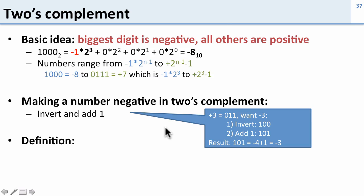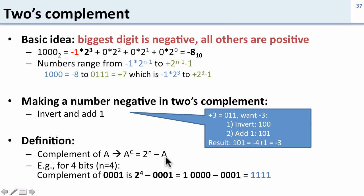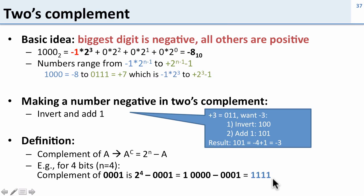Now we can go on and do a more specific definition. The complement of a is 2 to the n minus a. So if we take a look at a 4-bit number where n equals 4, the complement of 0 0 0 1 is 2 to the 4 minus 0 0 0 1. Now 2 to the 4 requires 5 bits, so this would be 1 0 0 0 0 minus 0 0 0 1, which equals 1 1 1 1. That's how we do the complement.